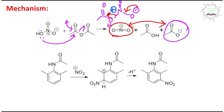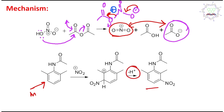This electrophile reacts with the aromatic ring. A meta attack happens, and after this attack a positive charge is produced which is resonance-stabilized by the double bonds. Ultimately, by elimination of a proton, aromaticity is restored. This gives the final meta nitro product.